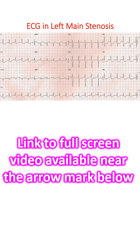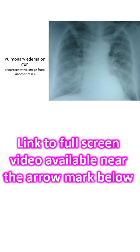ECG in a person with persistent anginal pain for the past several hours showing significant ST segment depression in anterolateral leads along with sinus tachycardia. ST segment elevation is noted in AVR. Such a pattern is consistent with significant left main coronary artery stenosis. Clinical evaluation and chest X-ray showed features of pulmonary edema.